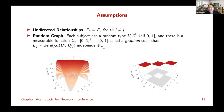Here are two simple examples of the graphon. The example on the right is actually a special case called the stochastic block model. In this model, if u_i is between zero and one-third, the person is in the first community; between one-third and two-thirds, they're in the second community; otherwise the third. The stochastic block model says the probability of two people becoming friends depends only on which communities they belong to. So the stochastic block model is a special case of the graphon.